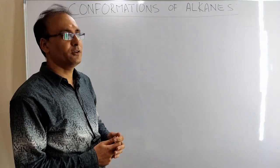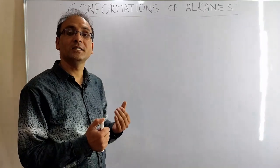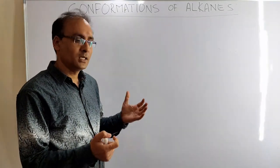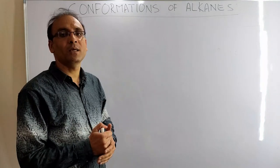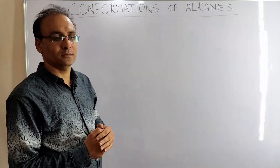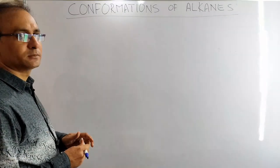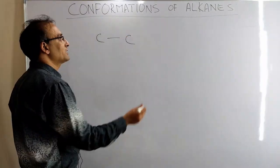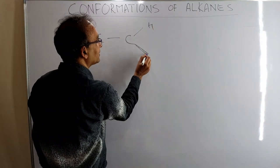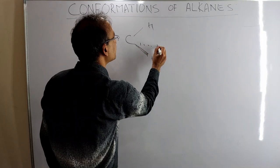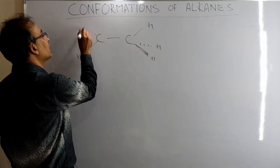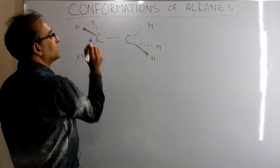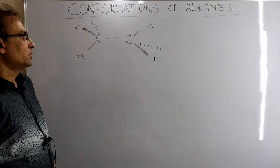Similarly, for any molecule, a little bit of energy from the surroundings allows it to change conformations, but it also spends maximum time in one conformation over others. Let's look at the example of ethane. Ethane has two carbons, and carbon has four valencies, so it looks something like this.